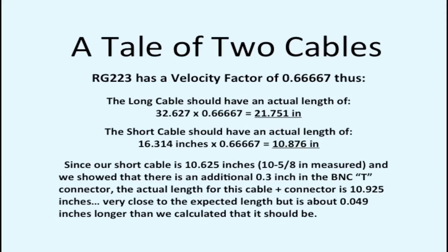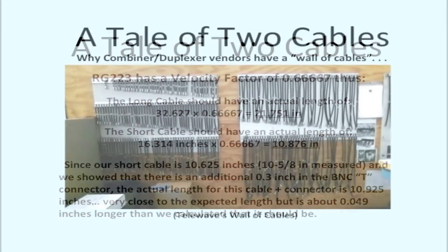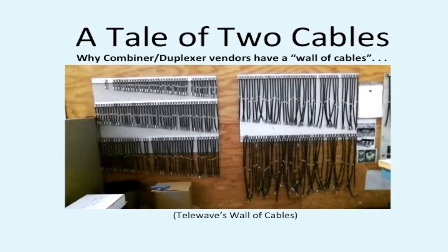So one wavelength is 65.254 inches, half wavelength is 32.627, and quarter wavelength is 16.314 inches. But RG223 has a velocity factor of 0.66667, thus the long cable that we have should have been 21.751 inches and the short cable should have been an actual length of 10.876 inches. And the short cable is actually measured at 10.625 or 10 and 5-eighths inches. We showed there is an additional 0.3 inches in the BNC T connector. The actual length for this cable plus connector is 10.925 inches which is very close to the expected length but about 0.049 inches longer than we calculated it should be.